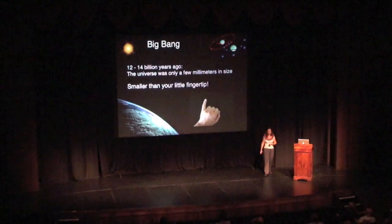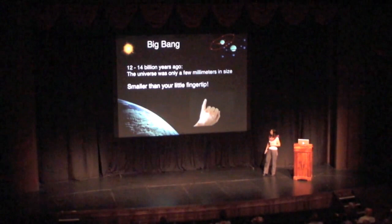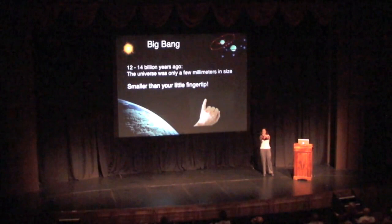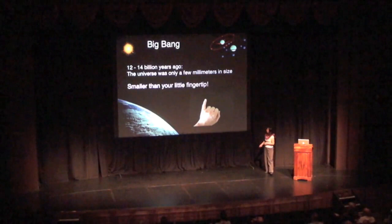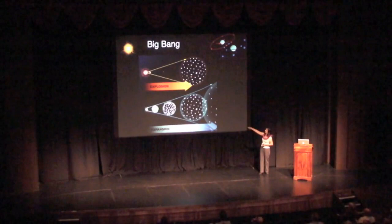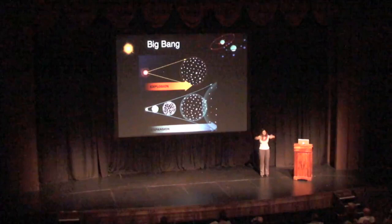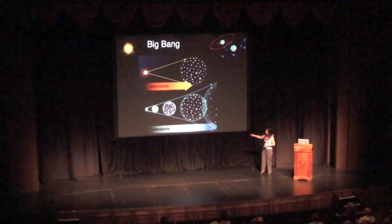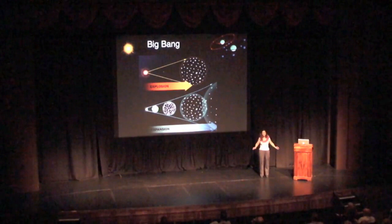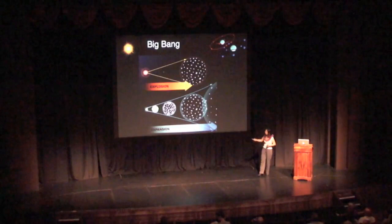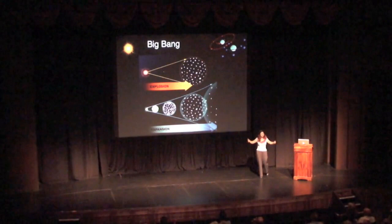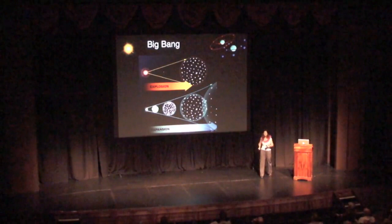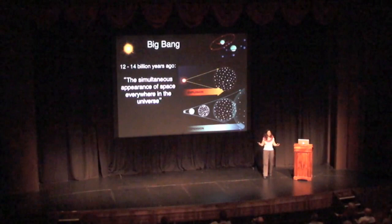The Big Bang happened 12 to 14 billion years ago, and the universe was actually only a few millimeters in size — about the size of my little finger. Then it expanded at a huge rate. It wasn't really like an explosion. An explosion blows things out from a center, and you'd find debris in a circle around it. Expansion is that everything everywhere is moving apart from each other — there's no center of the universe and no edge. You can imagine the Big Bang as the simultaneous appearance everywhere, suddenly, of space.